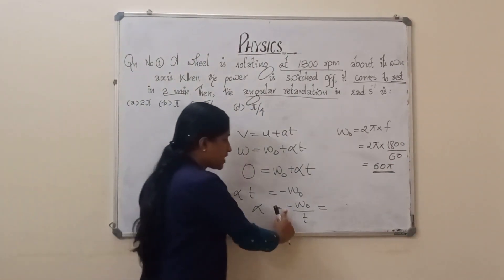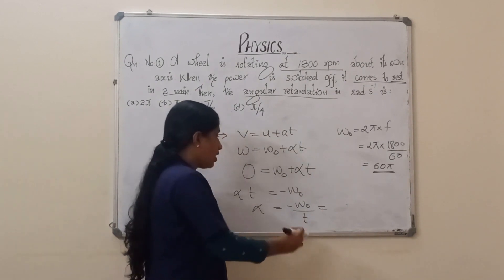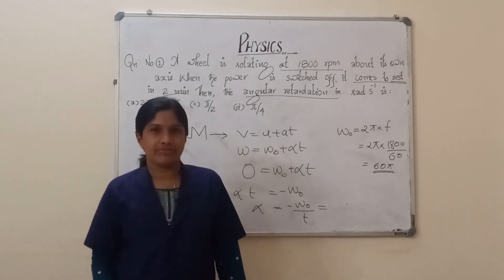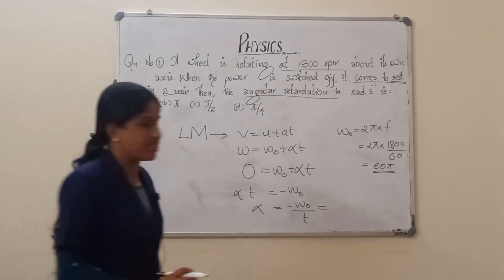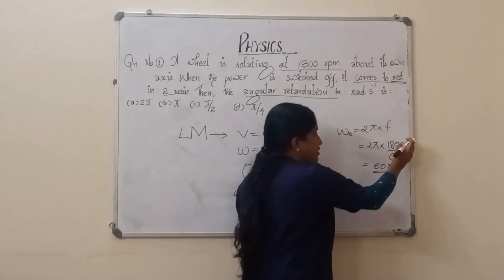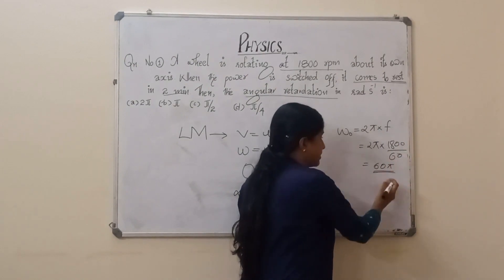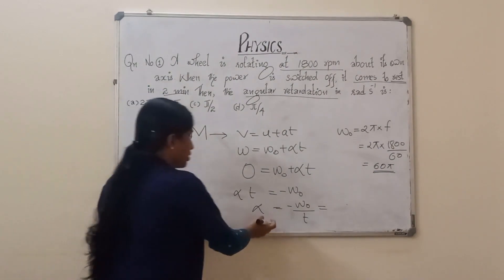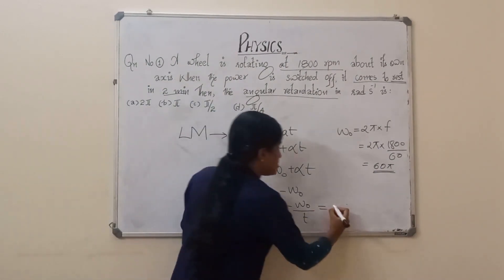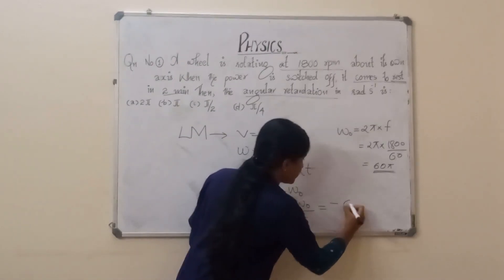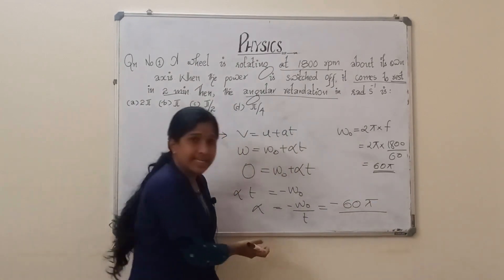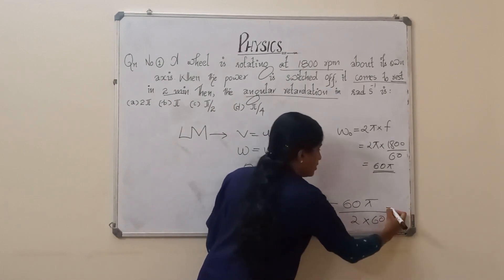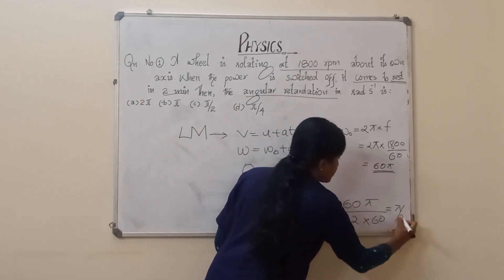So α = −ω₀ / t. We get ω₀ = 2πf = 2π × (1800/60). Then ω₀ = 60π. Substituting: α = −60π divided by (2 × 60). So we get the answer as π/2.